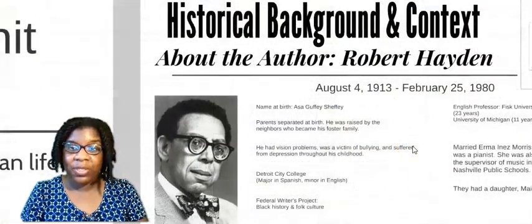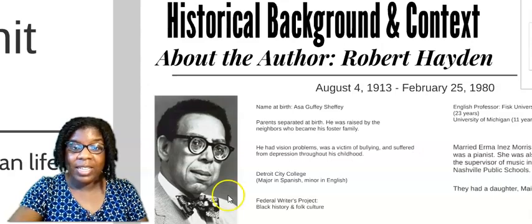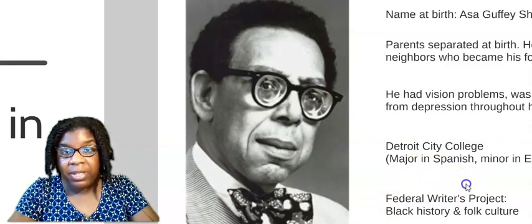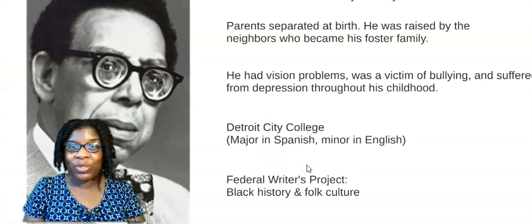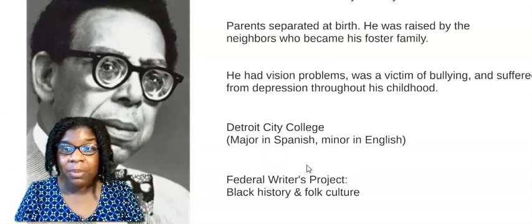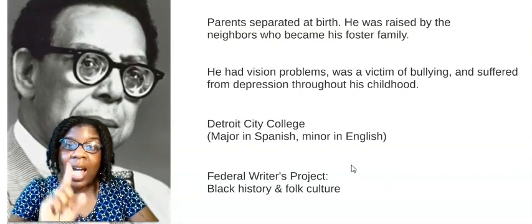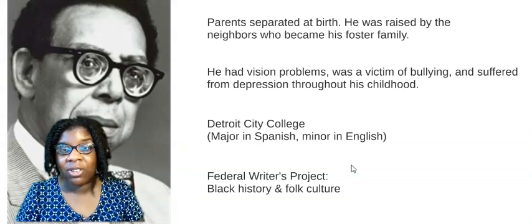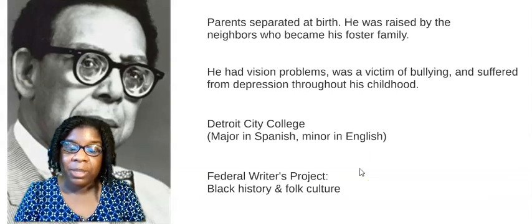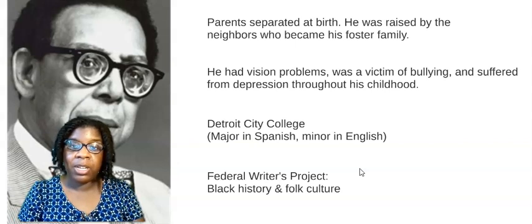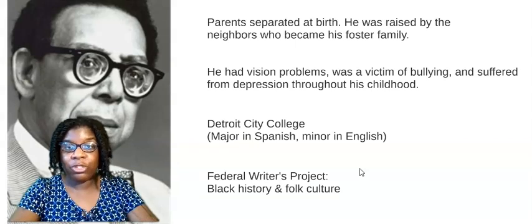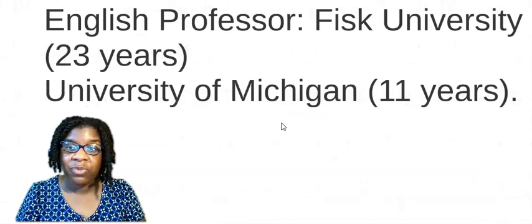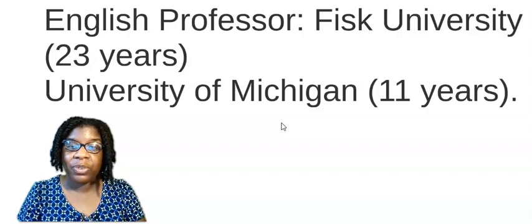Robert Hayden was born August 4th, 1913. He died February 25th, 1980. His name at birth was Asa Guffey Sheffey. His parents separated at birth and he was raised by the neighbors who later became his foster family. He had vision problems, was a victim of bullying, and suffered from depression throughout his childhood. However, he did manage to make it to college, and he was a graduate of Detroit City College, with a major in Spanish and a minor in English.